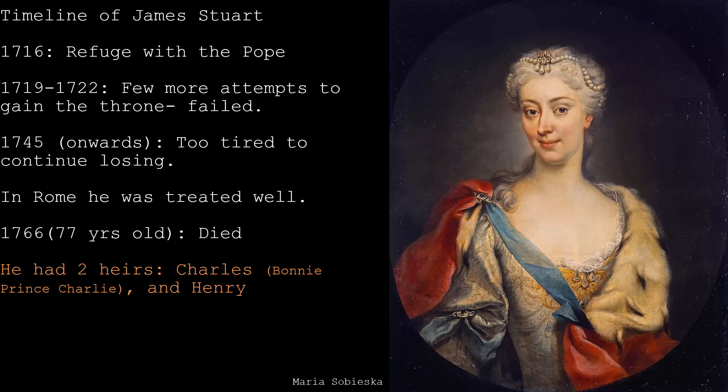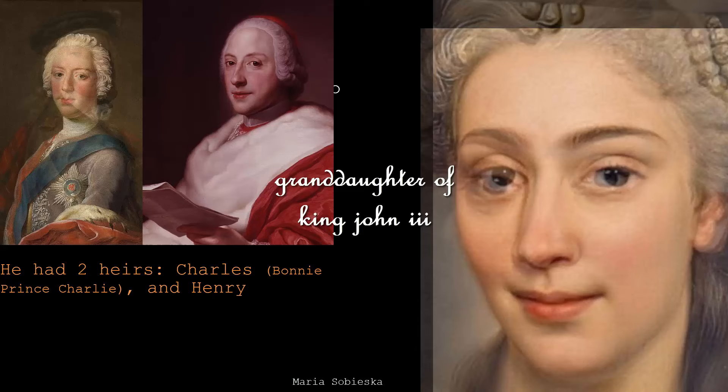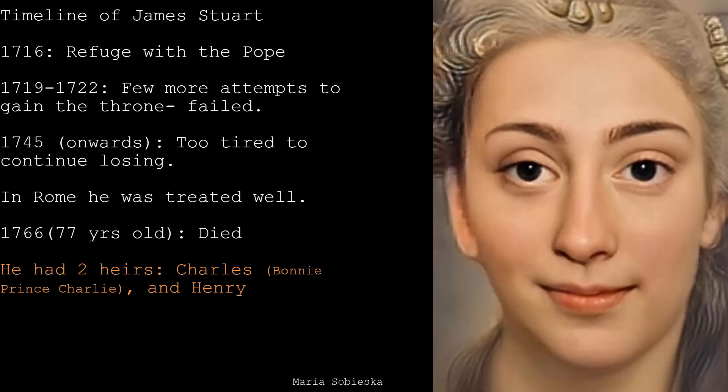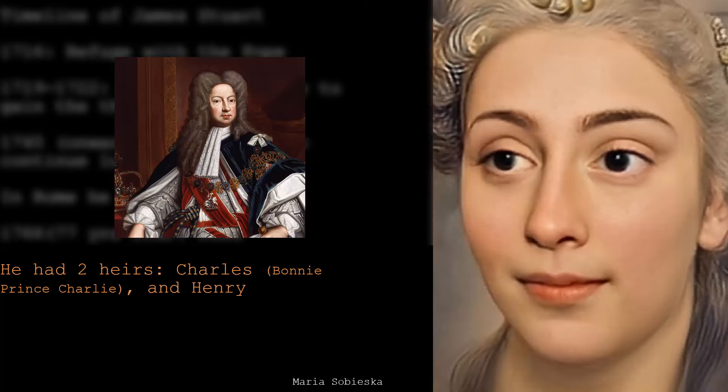James married Princess Maria Sobieska, daughter of King John III of Poland, and they had two children, Charles and Henry. Henry became a cardinal, while the elder Charles continued his father's claim to the throne. Unfortunately, at the death of James Stuart, Rome too began to recognize George I as King of Great Britain and Ireland, which put a damper on James' heir Charles' cause.